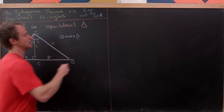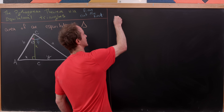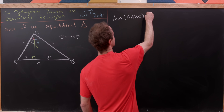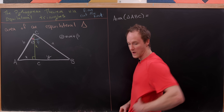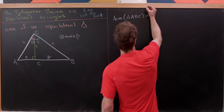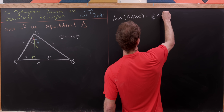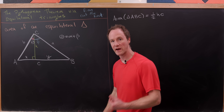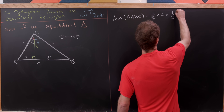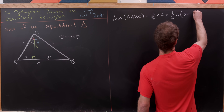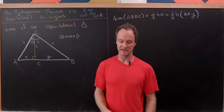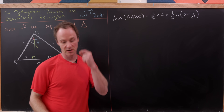Now we can use the fact that the area of triangle ABC is one half times h times c — that's one half base times height. We can also rewrite that as one half h times (x plus y), because c can be expressed as x plus y.